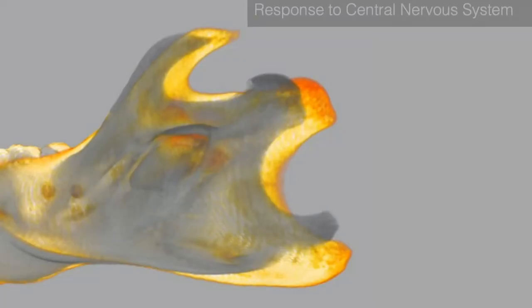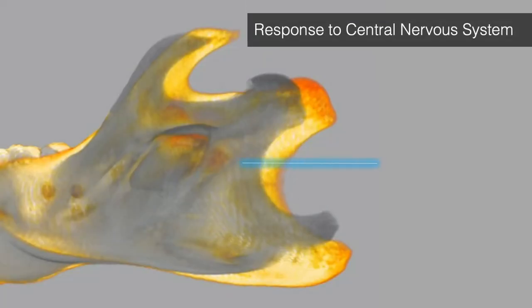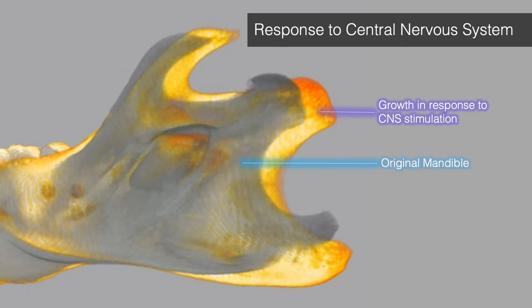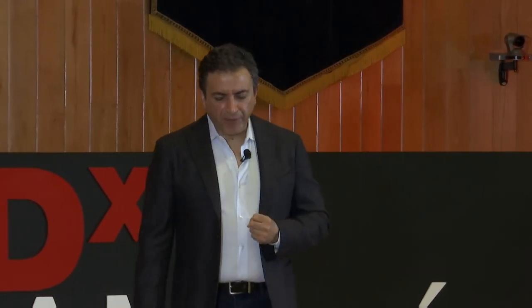In this series of experiments, we changed the signaling for the nervous system. The gray one shows the control animal's lower jaw. The yellow one shows how, by changing the nervous system alone — without anything else — we were able to grow the lower jaw. So this is the basis of NIMH that I was explaining to you.